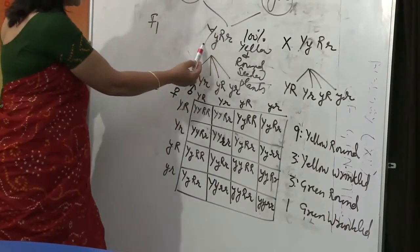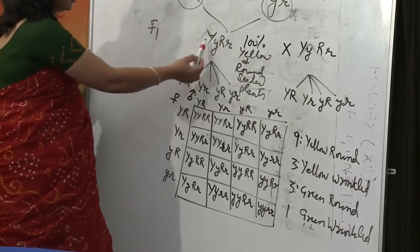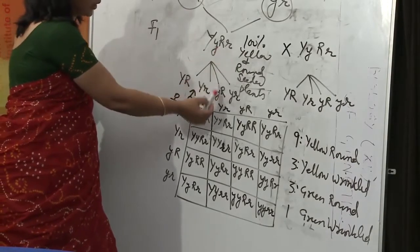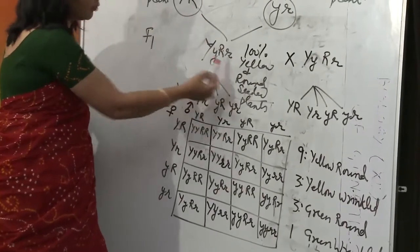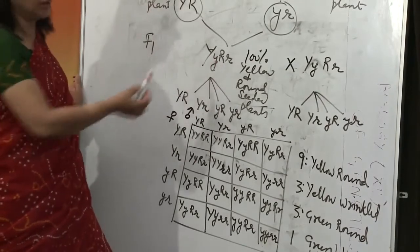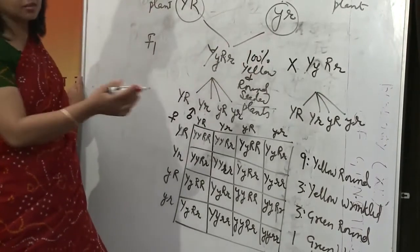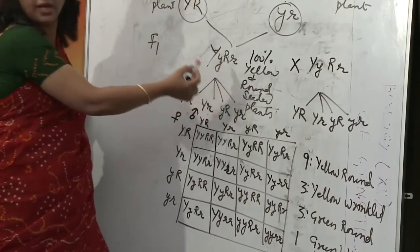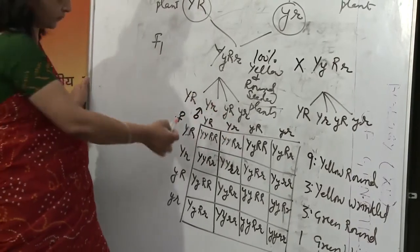Capital Y can go with capital R, capital Y can go with small r, small y with capital R, and small y with small r. There is no fixed combination like capital Y must go with capital R or small y must go with small r — it is independent of each other. As a result, all possible combinations are found in the progeny.